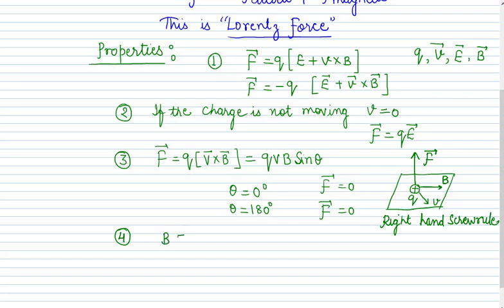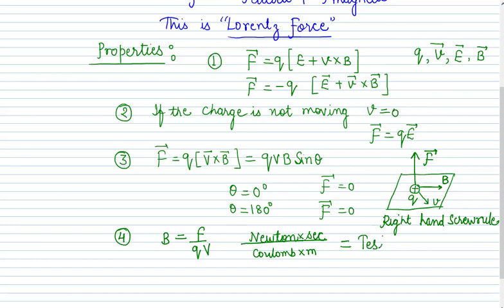The magnetic field B is given by B equal to F upon qv. If you want to write down the units: force is in newtons, charge is in coulombs, and velocity is in meters per second. So the unit of magnetic field is newton per coulomb per meter per second, and this whole unit we call as Tesla. Tesla is named after the scientist. We represent Tesla with the symbol capital T, so whenever you are calculating the magnetic field, use the unit as Tesla and capital T is used for representation.